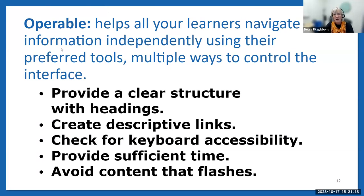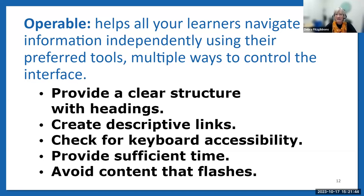When we think about operable, this is really helping our learners to be able to navigate through content. Some people will need to hit the Tab key to tab through a document because perhaps they aren't able to see it clearly. So when we're creating something, we need to build in those structures that allow somebody to tab through. Creating descriptive links is also important — if we add a raw HTTPS link with 40 characters and someone's using a screen reader, it reads all of that out loud. We want to make sure we're using descriptive links rather than making them guess. Also provide sufficient time for folks and avoid content that flashes.